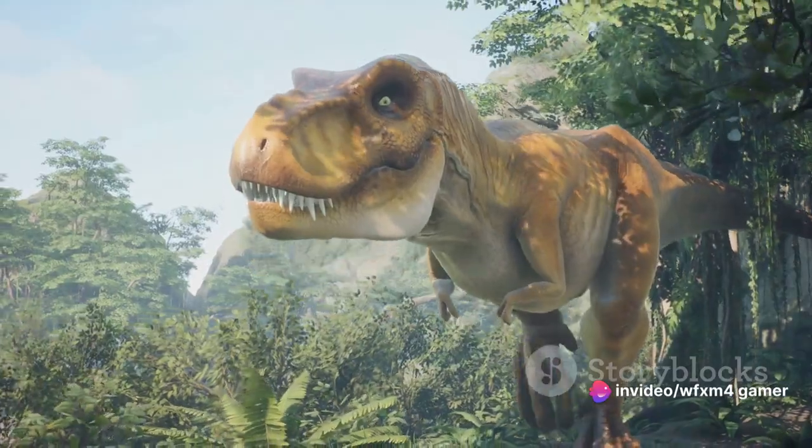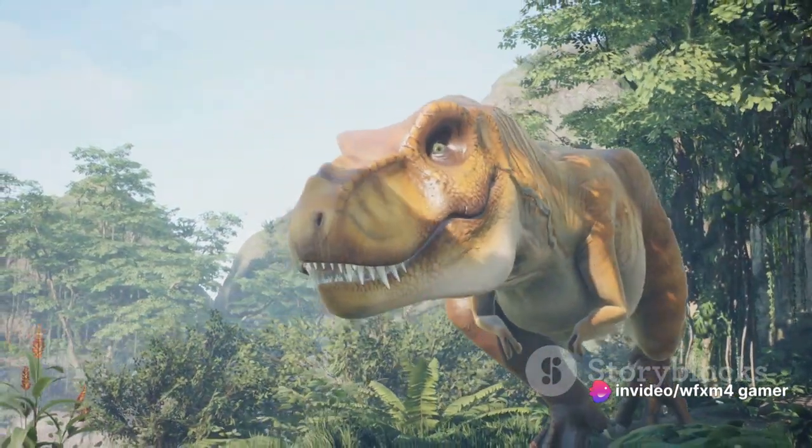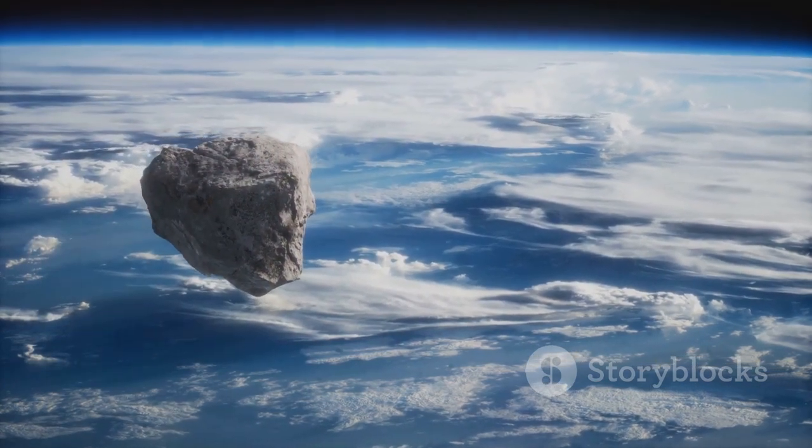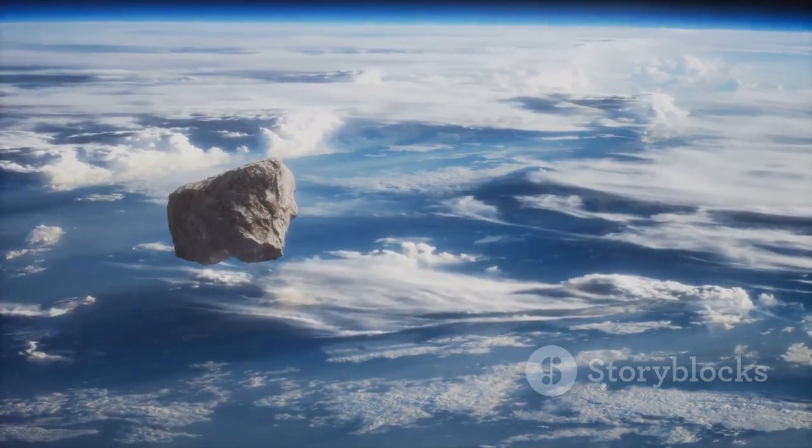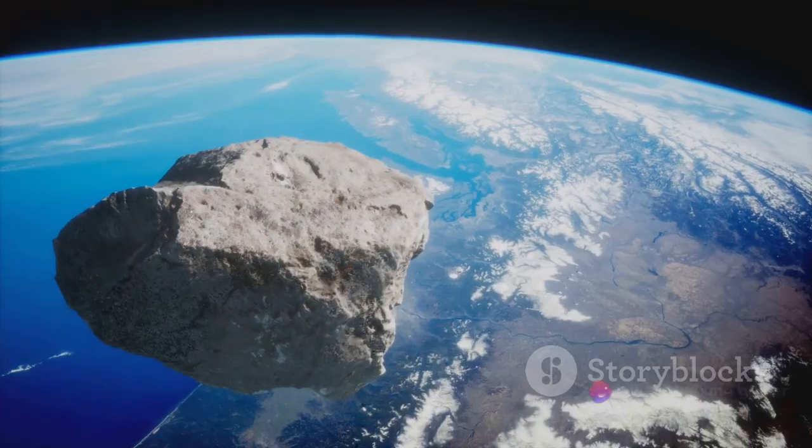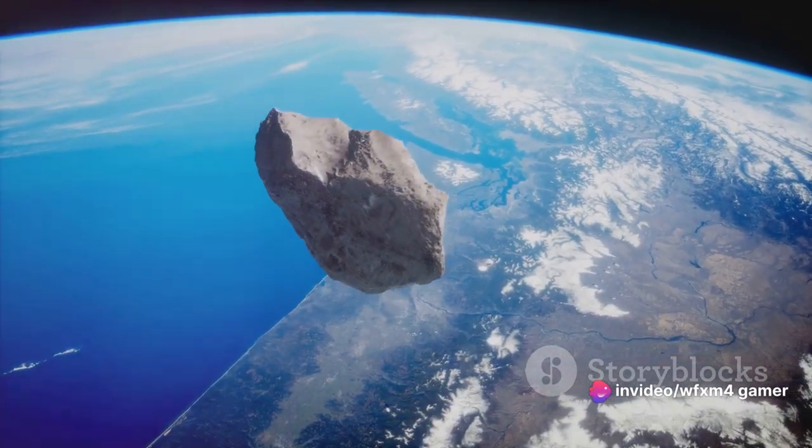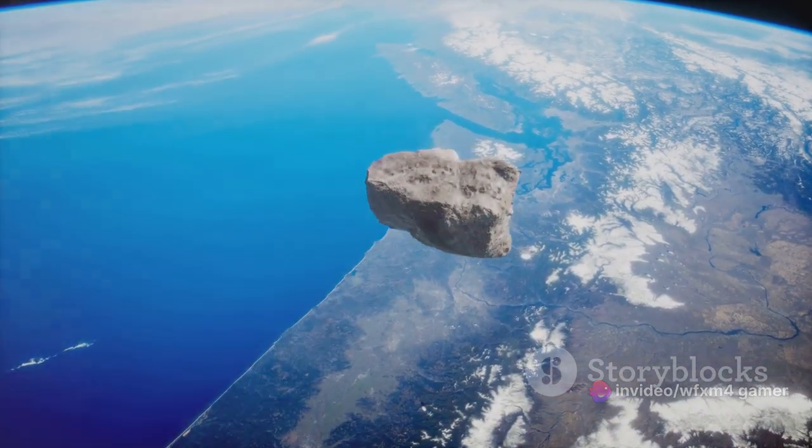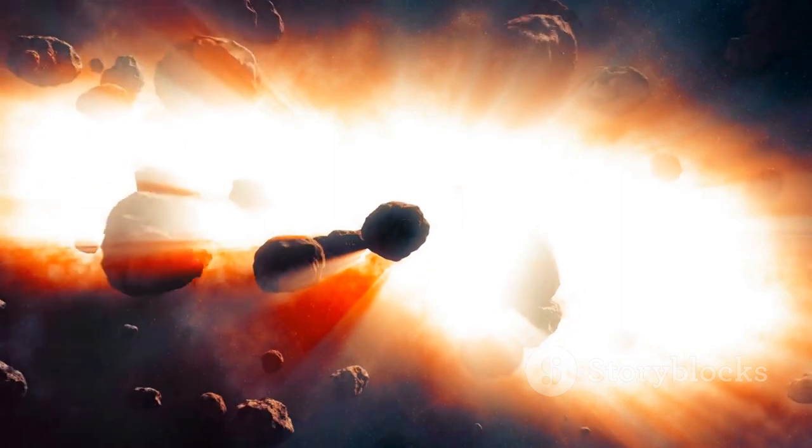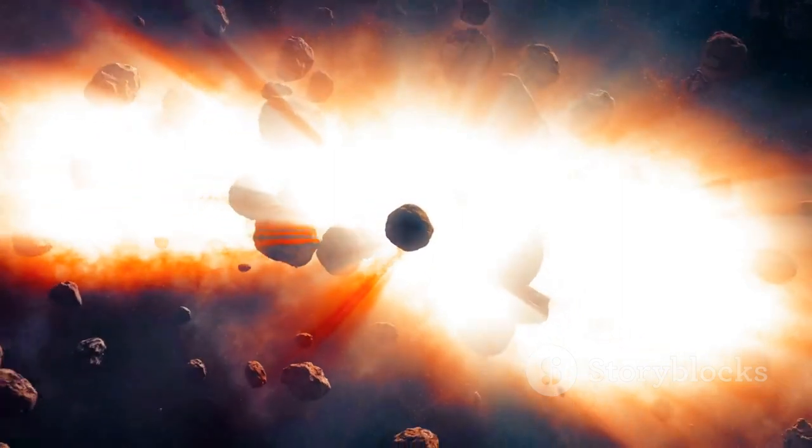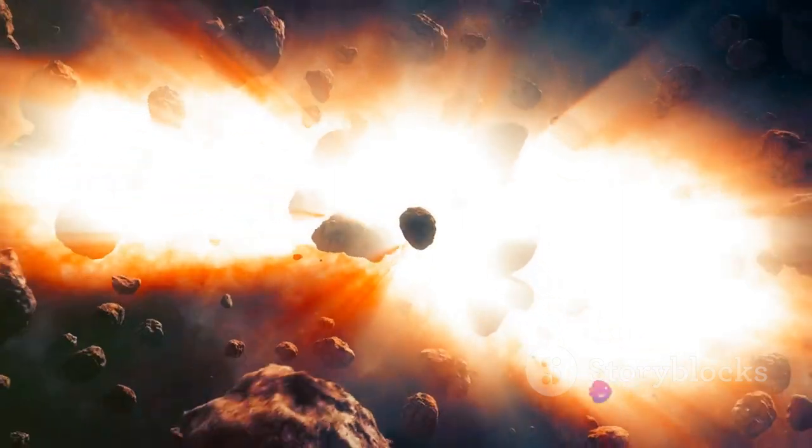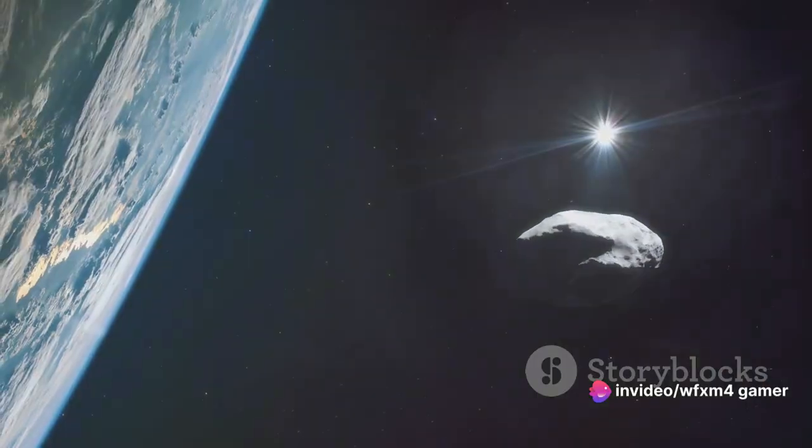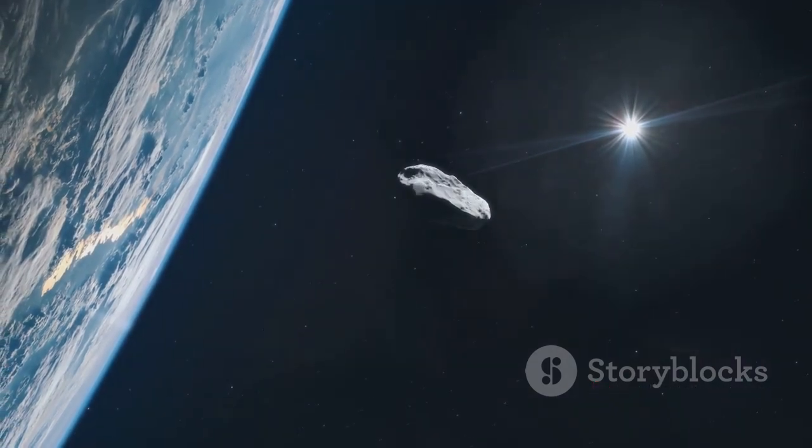Carnivorous dinosaurs, which relied on herbivores for sustenance, also began to starve. The survival of the fittest no longer held true, as the fittest had nothing to survive on. This drastic change in climate and the collapse of the food chain led to the extinction of not just the dinosaurs, but around three-quarters of all species on Earth. This mass extinction event marked the end of the Mesozoic era, often known as the Age of Dinosaurs. However, the story doesn't end with the demise of the dinosaurs. The Earth, in all its resilience, began a new chapter.